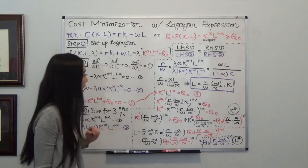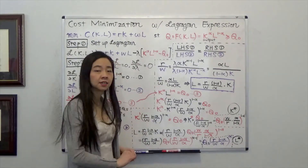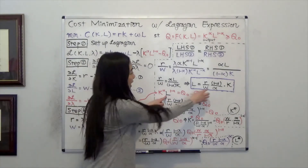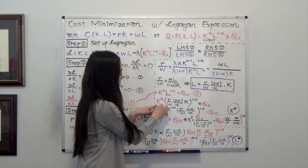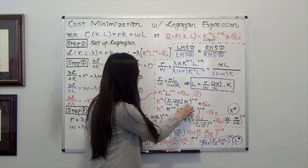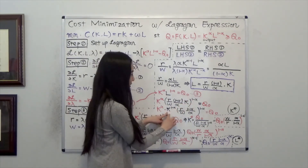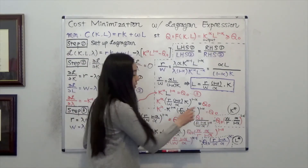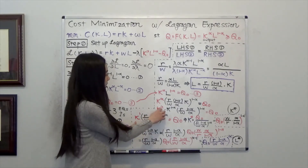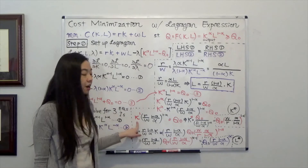The last step is to plug this expression for L into the quantity constraint. From equation three, K to the power of alpha times L to the power of 1 minus alpha equals Q0. I keep K to the power of alpha unchanged, and substitute the expression for L into the L to the power of 1 minus alpha term. Then I pull the K terms together: K to the power of alpha times K to the power of 1 minus alpha, which is just K itself, since alpha plus 1 minus alpha equals 1. So K times this remaining term equals Q0, and now I can solve for the optimal amount of capital.